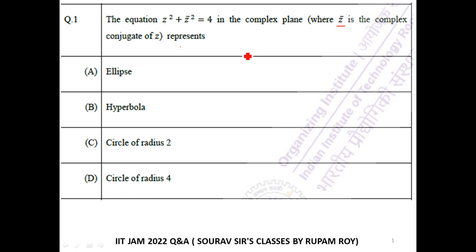We know that z is equal to x plus iy, and z bar will be x minus iy. The complex conjugate of z is z bar.